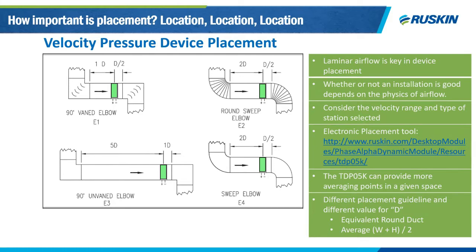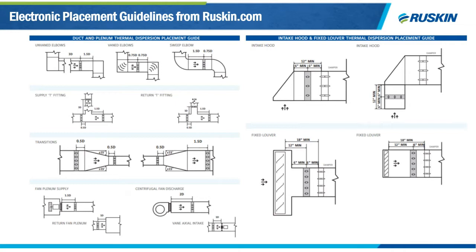Thanks Spencer. The basic math can be useful for design considerations like sizing for airflow, but another key design consideration is where you place one of these devices. Airflow devices require laminar airflow to read accurately, which is a function of physics based on obstructions in your duct and equivalent duct diameters. Here you can see examples for velocity pressure devices for various types of elbows. In cases of limited space, it may be a good idea to consider veined elbows over unveined to help provide laminar airflow more efficiently.